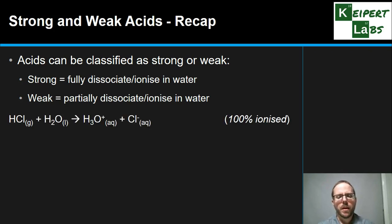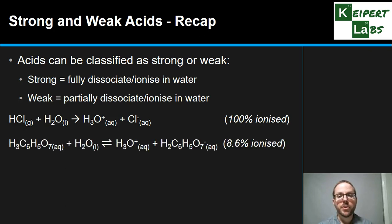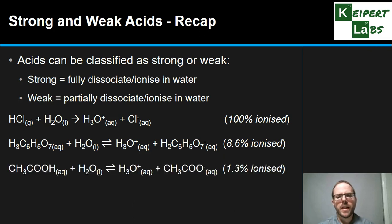So for example, HCl is a strong acid, 100% ionization, whereas citric acid only 8.6% ionizes. Acetic acid only 1.3% ionizes. So the first one is a strong acid and the other two are weak acids. And we can see by looking at these figures that acetic acid is the weaker of those two because less of it is ionized or dissociated.